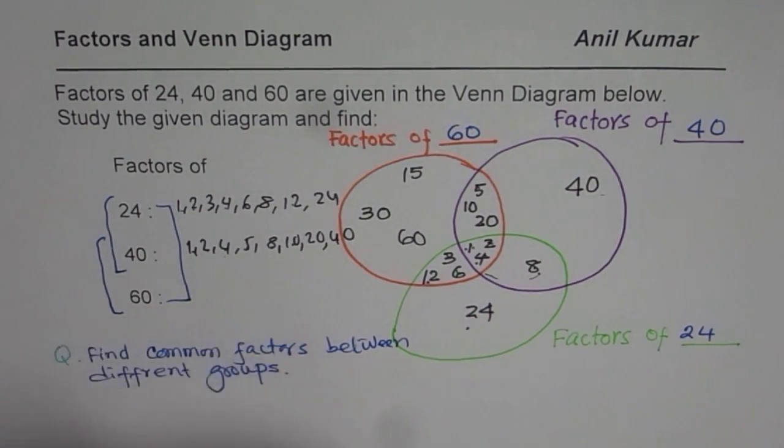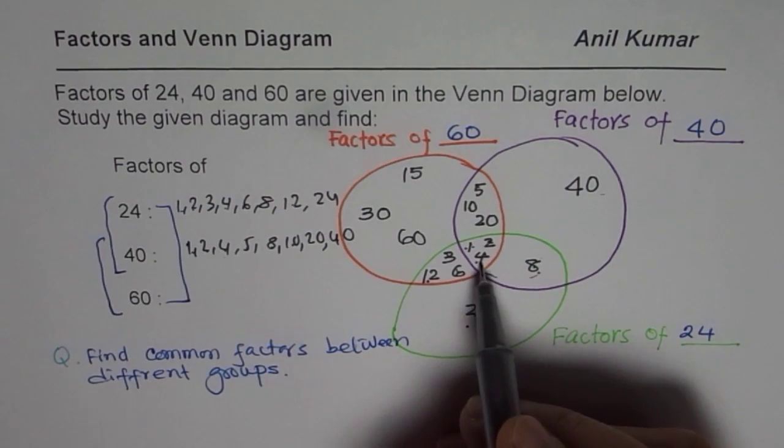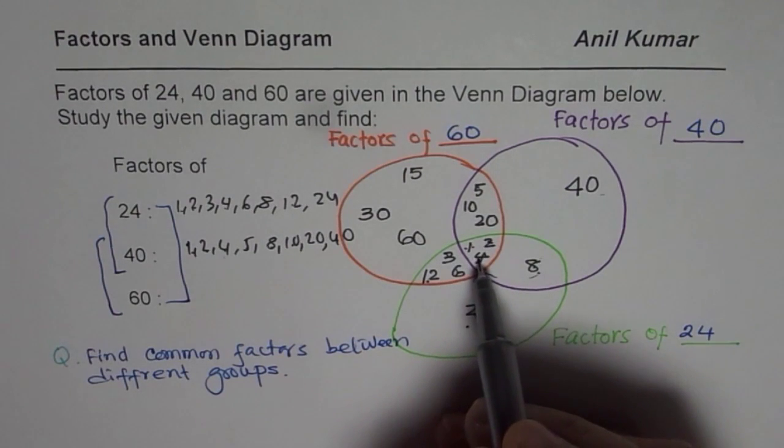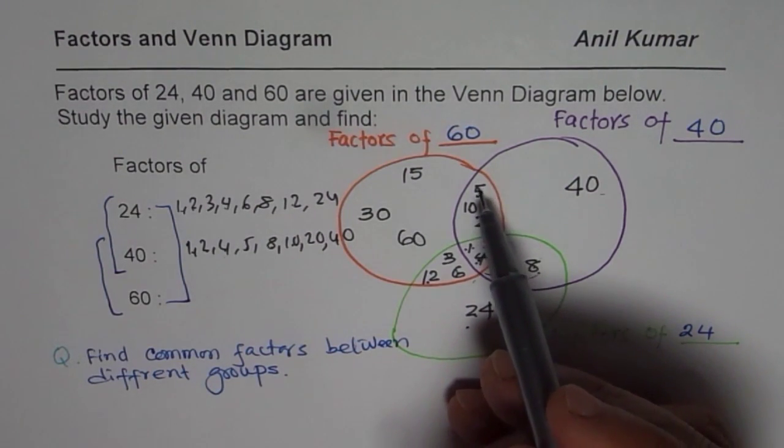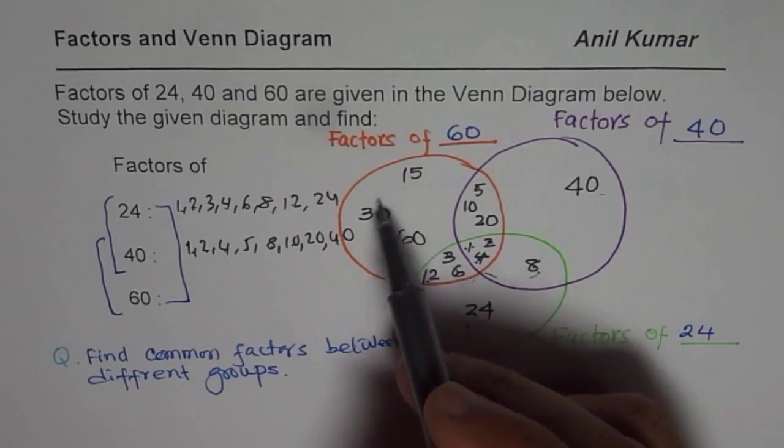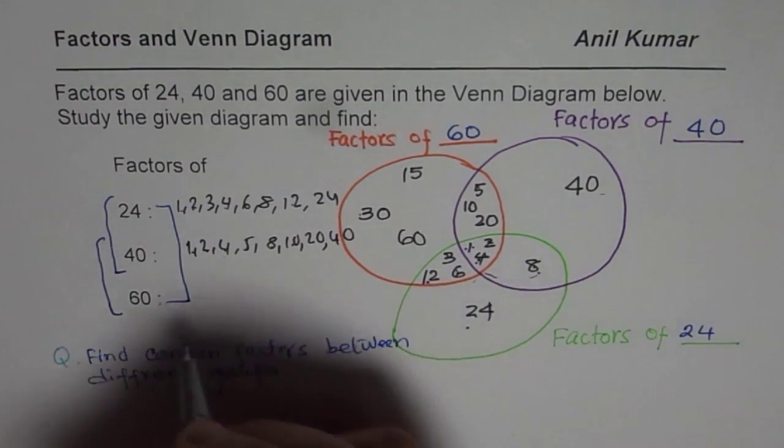Now, let us look into factors of 60. 1, 2, 4 are common between all the three. We have for 60 within this orange group, which is 1, 2, 3, 4. Then, we have 5, 6, 10, 20, 12, 15, 30, 60. Let us write down all these numbers.